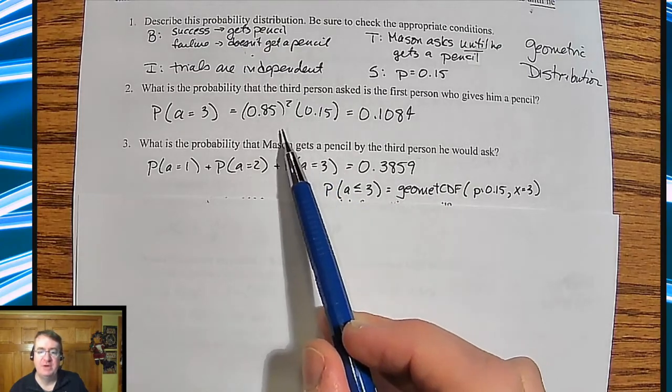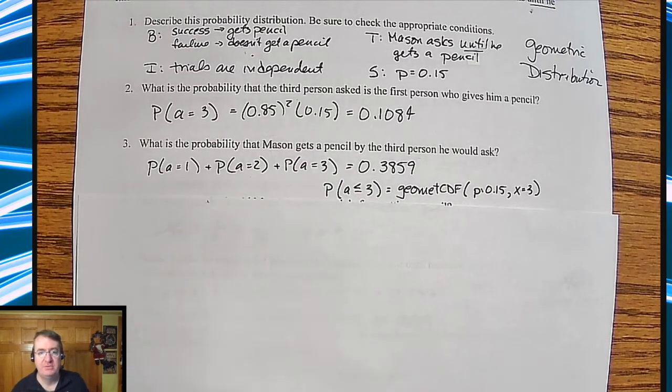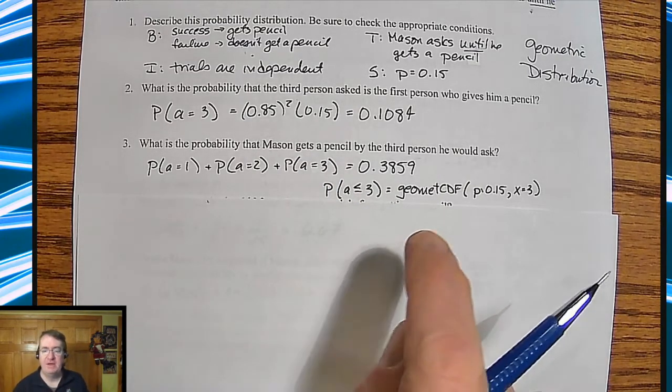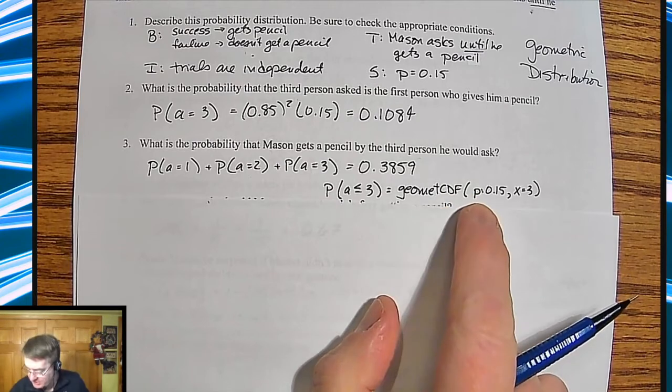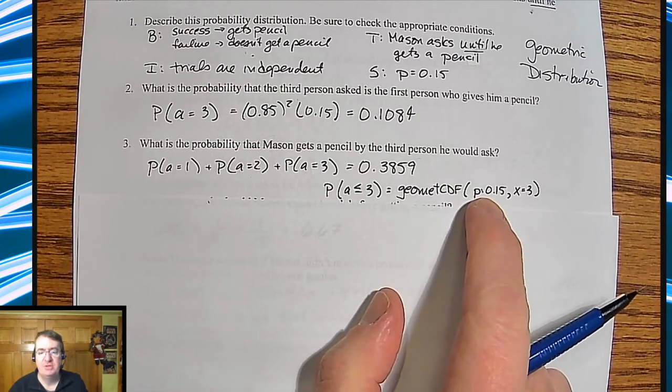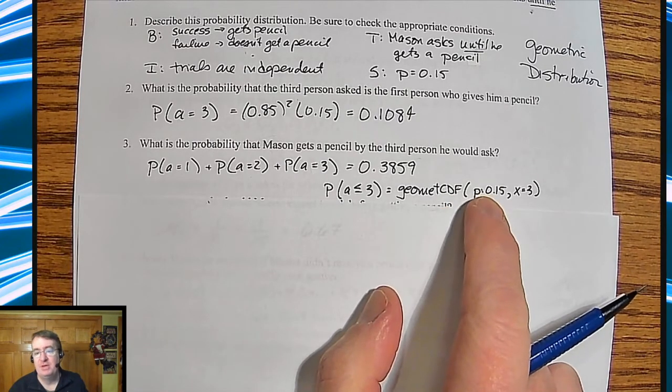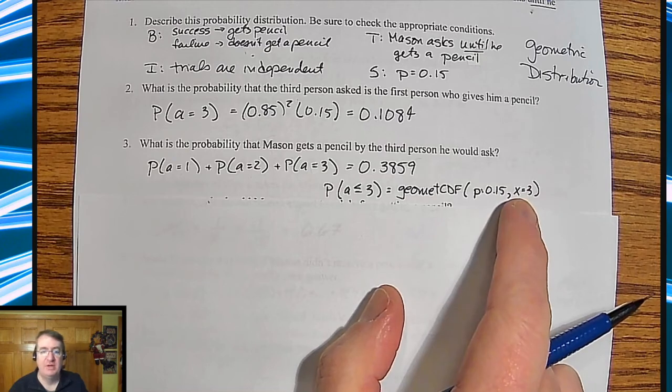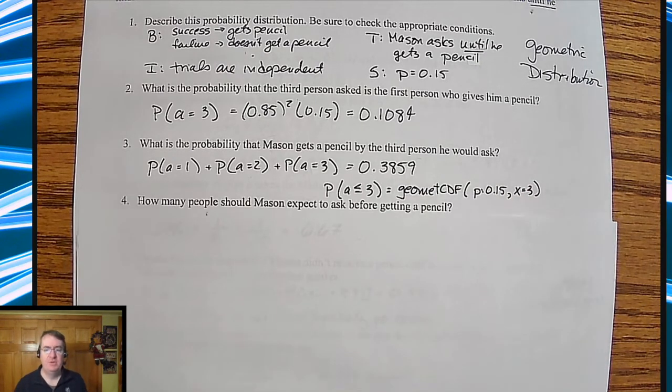Much like you'll see binomial distribution and normal distribution options under your calculator, you will also see geometric CDF and PDF. If it's a PDF, I just find it's easier to go through this than typing everything in. But for CDF, I definitely use it. There's only two conditions you have to type in: what the probability is, and then what is your X value.